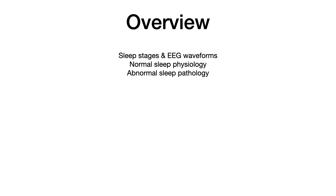I'm going to begin by talking about the different stages of sleep and the corresponding waveforms that you see on an EEG. Then I'm going to talk about the normal sleep physiology, so how sleep progresses throughout the night. I'll conclude the video by talking about some abnormal sleep pathology and tying those pathologies back to the different stages of sleep. There'll be a couple useful mnemonics as we go. So let's get started by talking about sleep stages and EEG waveforms.